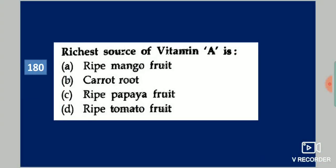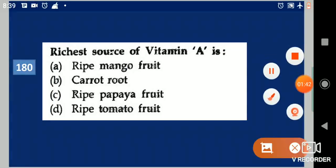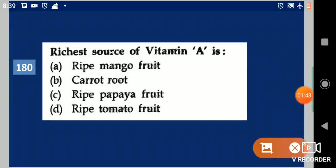Next question: Richest source of vitamin A is dash. Your options are: ripe mango fruit, carrot root, ripe papaya fruit, ripe tomato fruit. Your answer is ripe mango fruit.